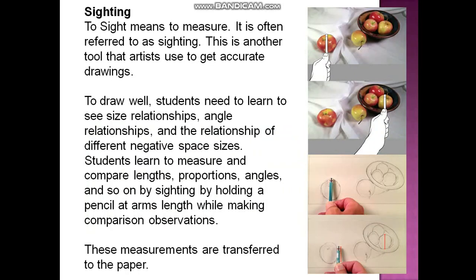Sighting. To sight means to measure — it is often referred to as sighting. This is another tool that artists use to get accurate drawings. Students need to learn to see size relationships, angle relationships, and the relationships of different negative space sizes. They learn to measure and compare lengths, proportions, and angles by holding a pencil at arm's length while making compositional observations, and these measurements are transferred to the paper.